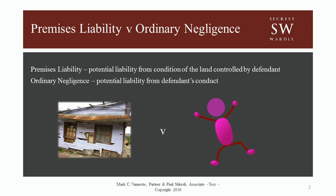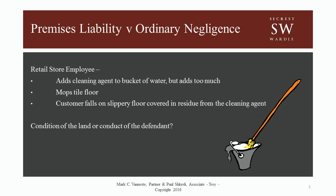First, let's discuss the difference between a premises liability claim and one based in ordinary negligence. The primary difference between these two causes of action comes down to whether a defendant's potential liability arises from the defendant's conduct or a condition on the land controlled by the defendant. For example, let's consider a retail store employee who's been assigned to mop a floor. When preparing the mop bucket, they add too much cleaning agent, and after mopping, they leave a slippery, soapy residue on the tile floor. Shortly thereafter, a customer slips on the floor and sustains an injury.